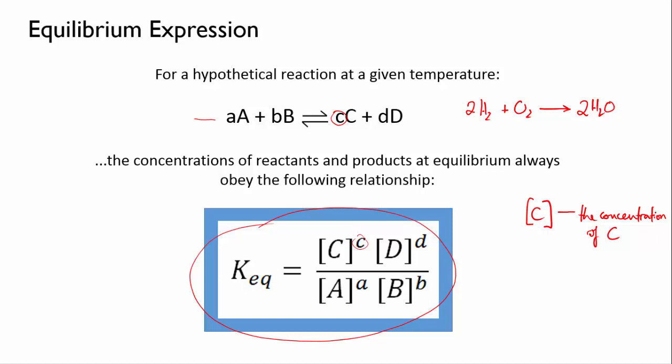This expression will then always equal a particular constant, which is called the equilibrium constant, or KEQ. A given chemical reaction will have a particular KEQ, and nothing can change this constant except for temperature. So as long as you're performing a reaction at a constant temperature, you can say that at equilibrium, the concentrations of products and reactants will always obey this relationship.